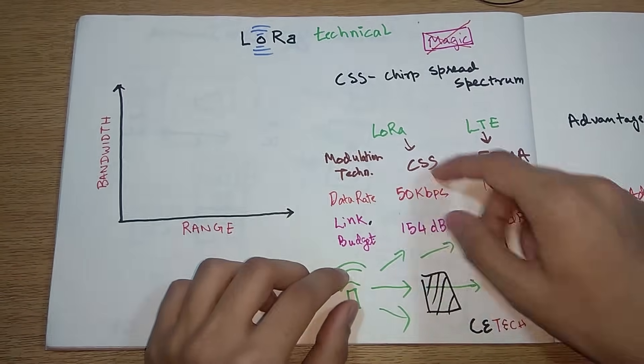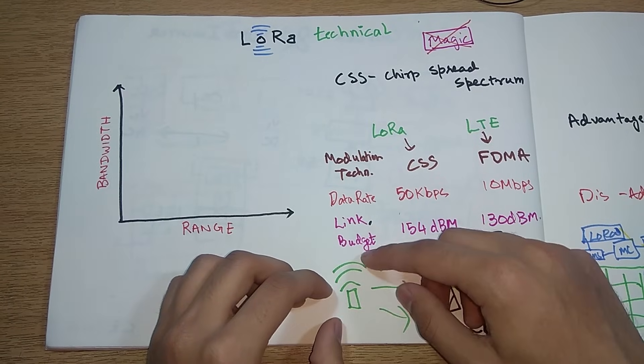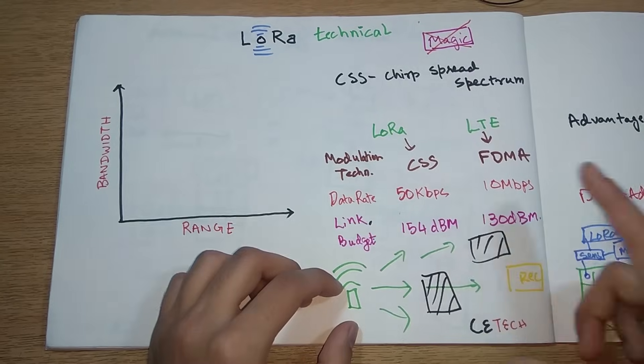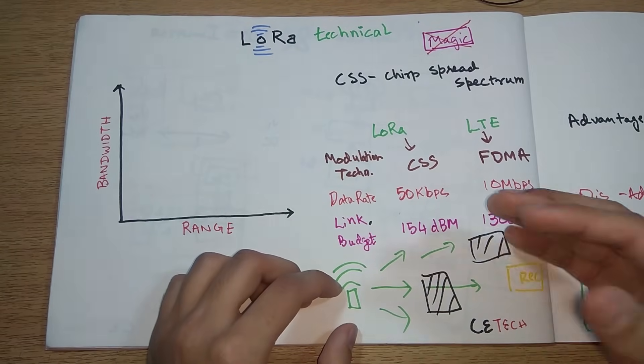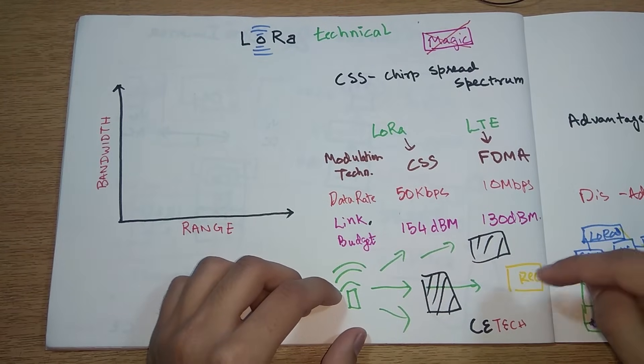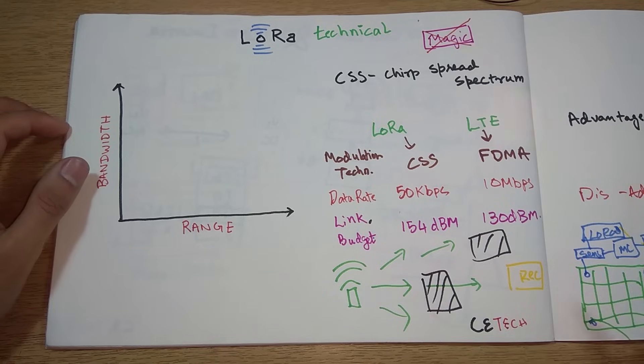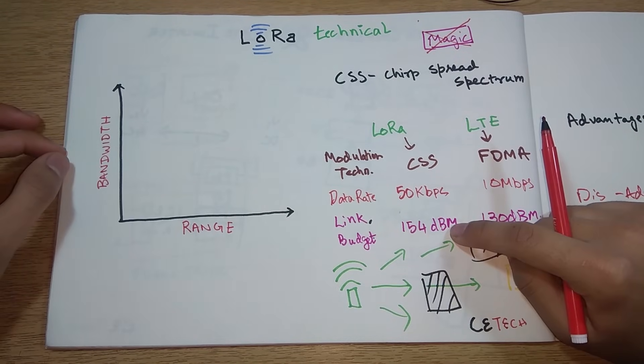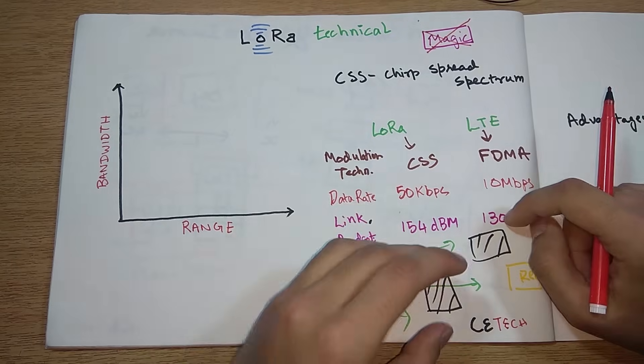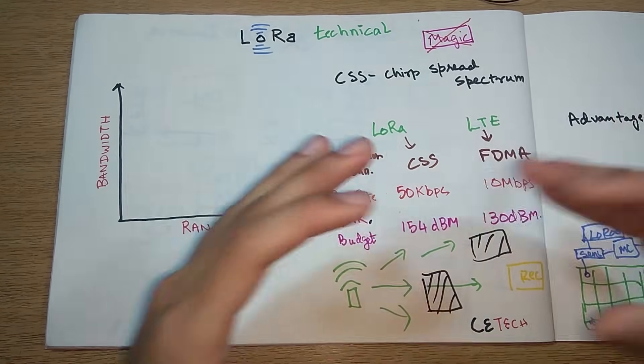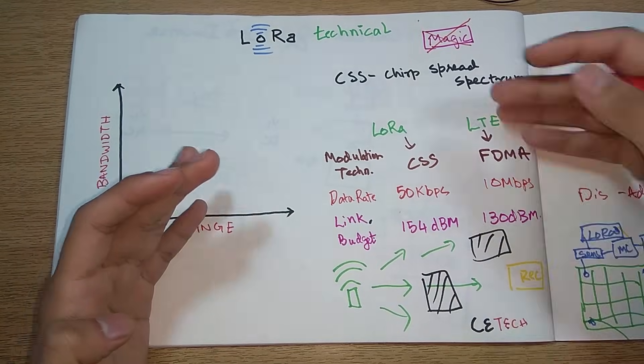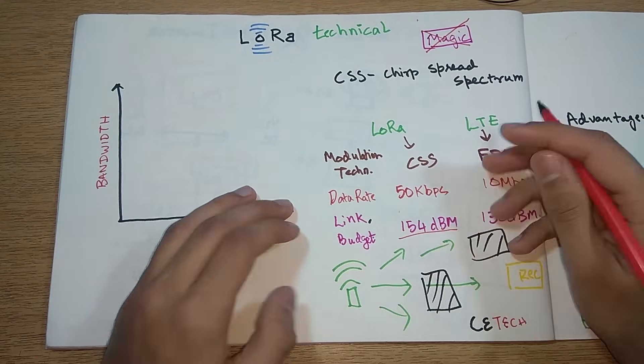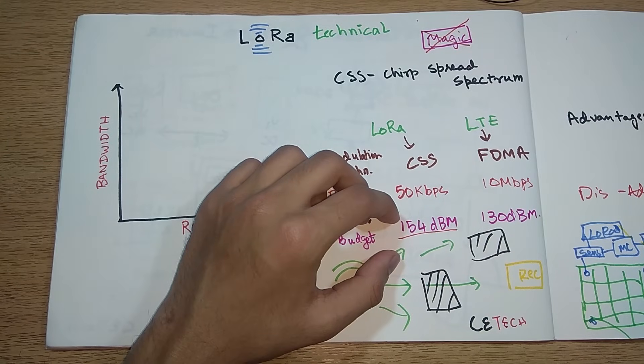Your receiver will be at a far distance from the transmitter. So more the link budget of the signal or the technology or the modulation technique that is used in this antenna while transmitting the signals, the better the capability of that signal to reach the receiver. As LoRa has a better link budget than LTE, it has definitely a better range and a better capability of transferring signals.